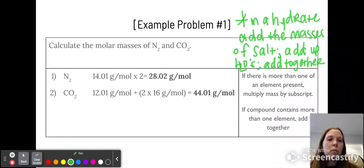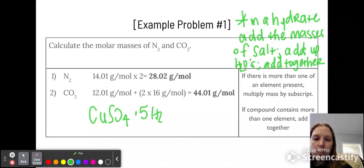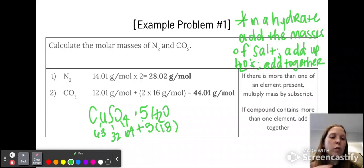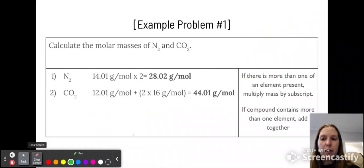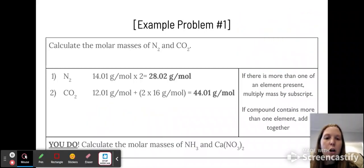So in a hydrate, like if we had CuSO4·5H2O, you would do 5 times 18 for water plus the mass for copper, which is like 63, plus sulfur 32 and then oxygen 64. So you would add all of those masses up together. So just pause really quick, write that down because I'm going to clear the screen and keep going. Now I want you to pause the video and try these examples.